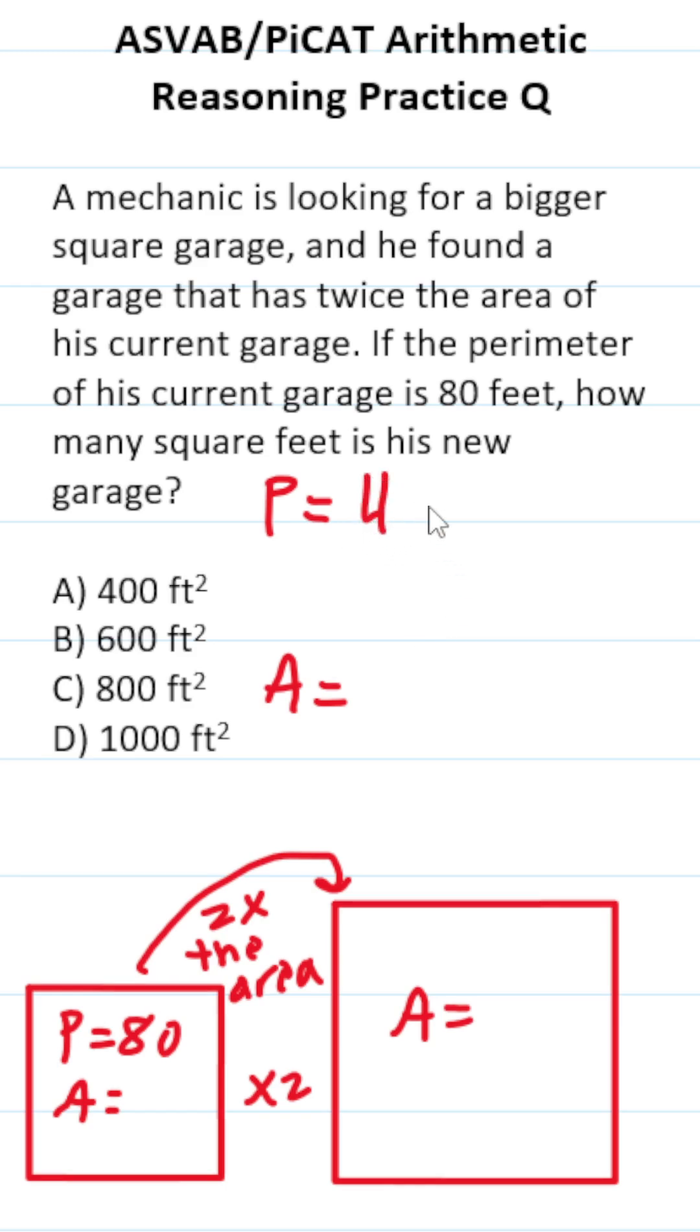For this one, we're going to need the perimeter formula and the area formula for a square. That is perimeter equals 4S and area equals S squared. We know the perimeter of his current garage is 80 and we can solve for S by dividing both sides by 4.